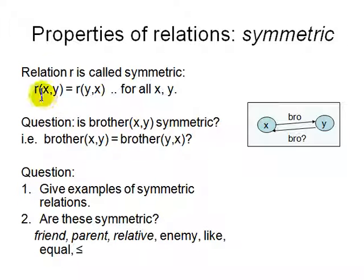First of all, symmetric. A relation is called symmetric if R(x,y) is the same as R(y,x) for all x,y in the set we are talking about. So is brother symmetric? If x is a brother of y, does it mean y is a brother of x? Think about it.